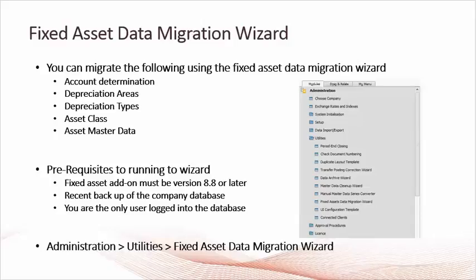The wizard can be found in the Administration module under Utilities > Fixed Asset Data Migration Wizard. To run the wizard, select it from Utilities, then select 'Start a new migration' or run an existing selected one. Finally, you should be able to view the summary report of the migration.